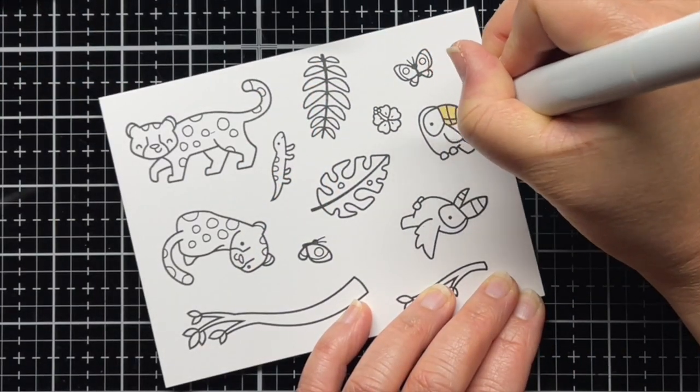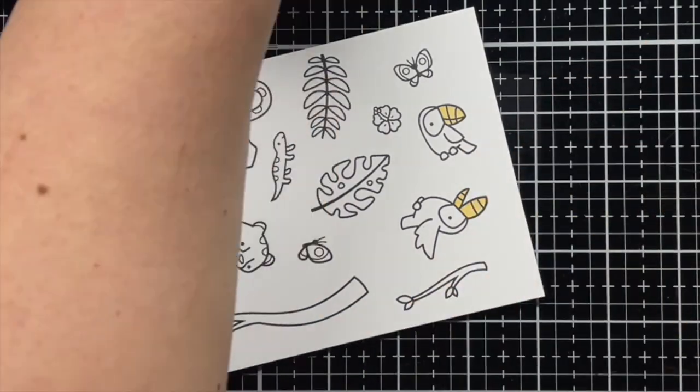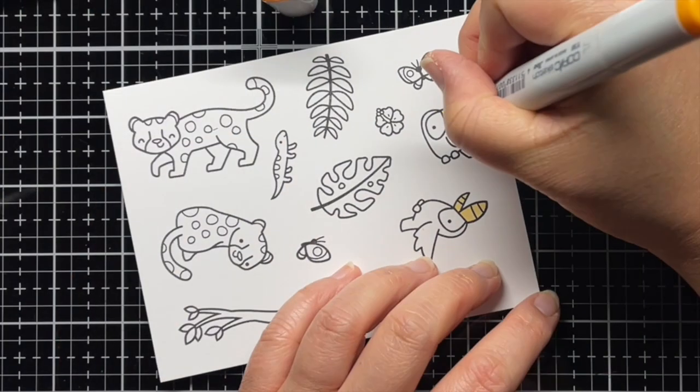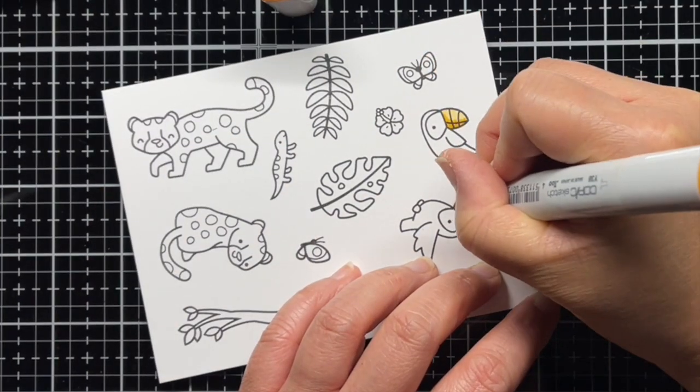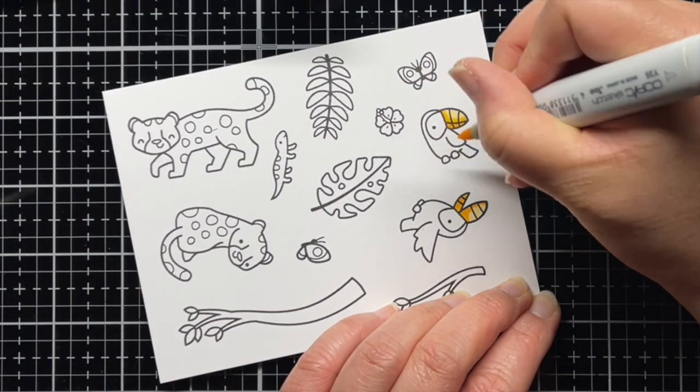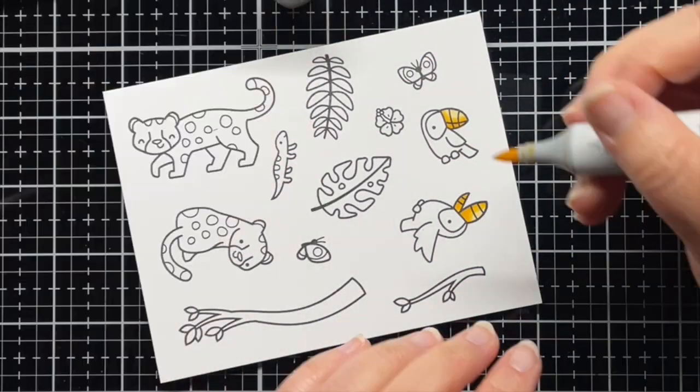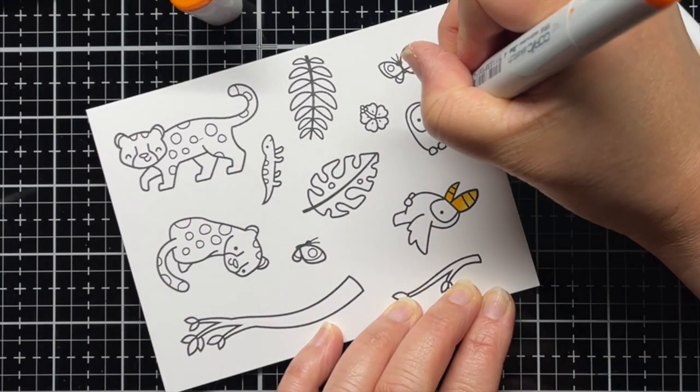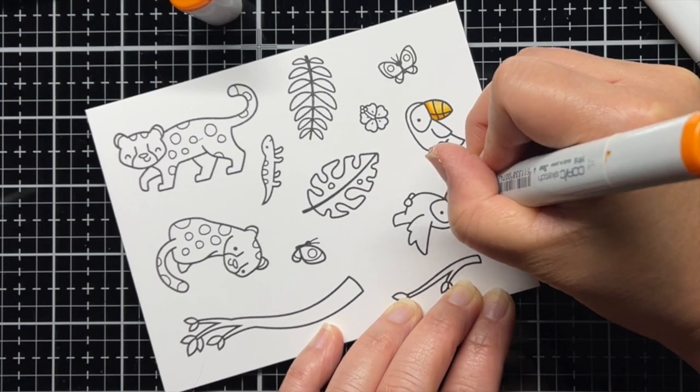Next, I stamp the images from Toucan Duet onto white cardstock with jet black copic-friendly ink and color them with copics. I use Y30s and YR16 for the toucan's beaks and toner grays for their bodies. I start with my lightest color first and then add my darkest color for shading. Then I blend back out to the lightest color and use that to blend everything together.